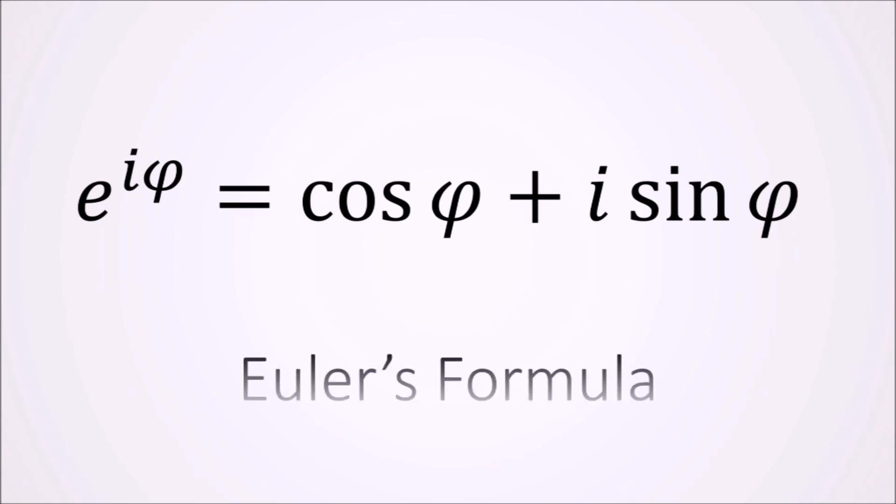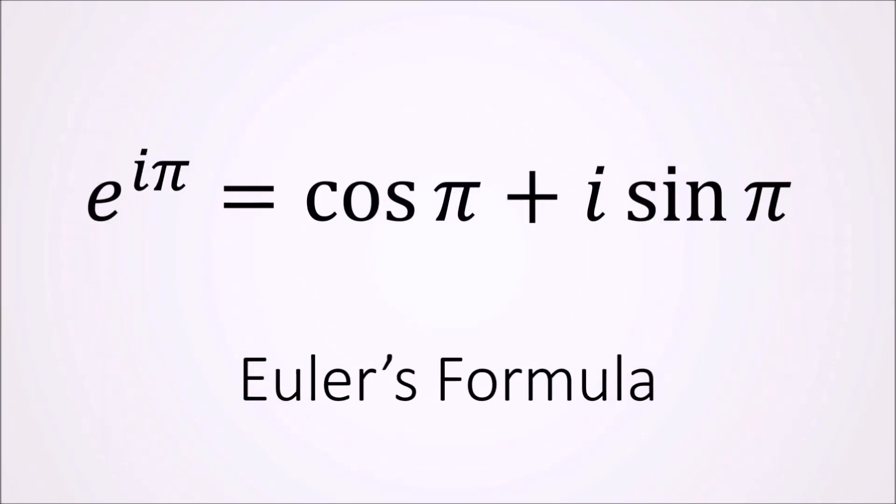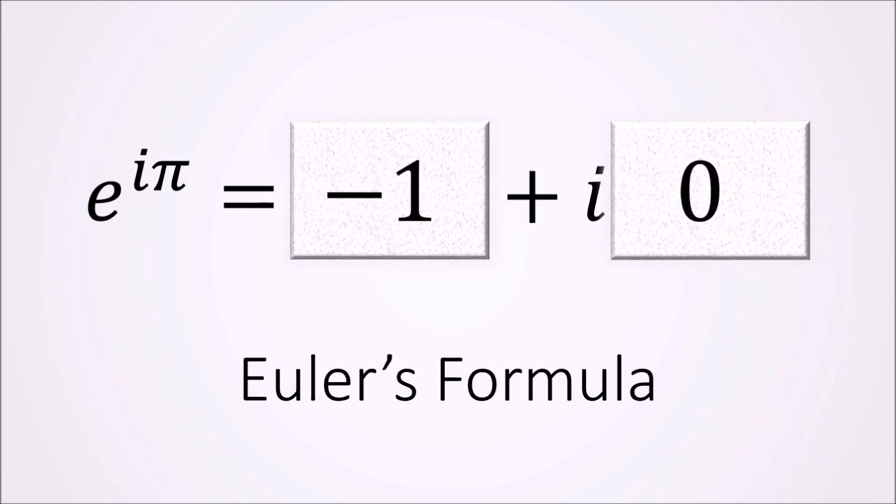This is known as Euler's formula. And it becomes even more epic when we take phi as pi radians. Cosine of phi equals minus 1 and sine of phi equals 0. So what we get is the following.